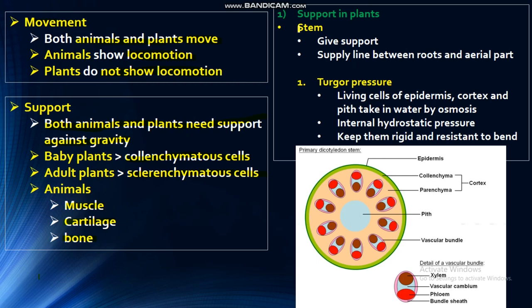Let's talk about plants. There are different organs of plants — there are stems, leaves, and roots. There are two major functions. The first function is support. The second function is that the stem acts as a supply line between roots and aerial parts of the plant. In young raw plants, the stem uses turgor pressure which helps the stem to keep straight.